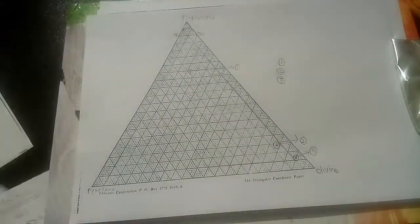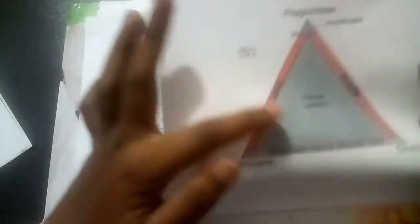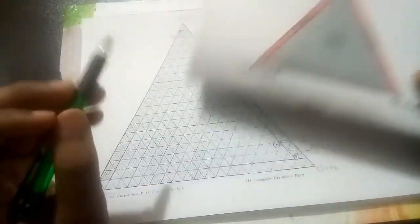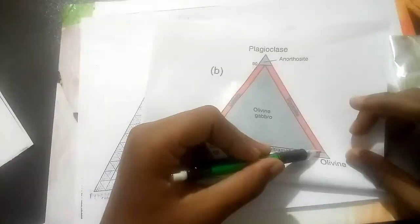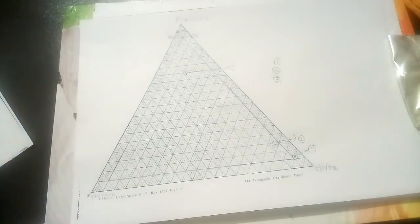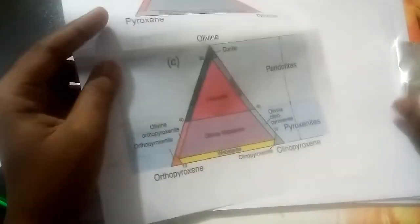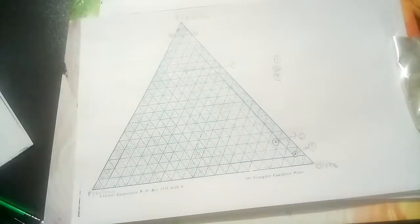Looking at the IOGS classification diagram: our first mineral plots at the center — it is olivine gabbro. Our second mineral also plots inside the triangle — it is also olivine gabbro. Our third mineral plots above the dividing line, which falls under troctolite. So sample 1 and sample 2 are olivine gabbro, and sample 3 is troctolite. We have successfully completed this example.